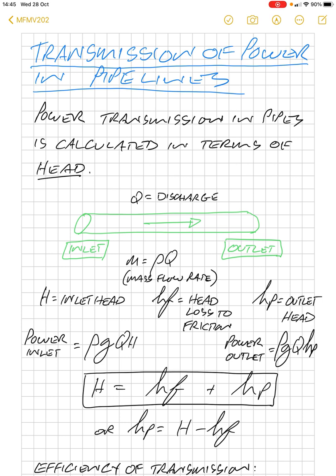On the left, we've got the inlet head. Through the pipe, we've got the head velocity of friction, Hf, and on the right, we've got Hp, which is our outlet head.